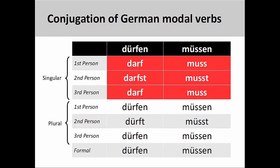The stem vowel in the modal verb müssen changes from ü to u in the singular, but goes back to ü in the plural.